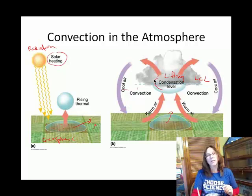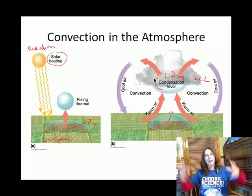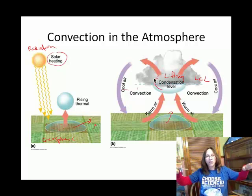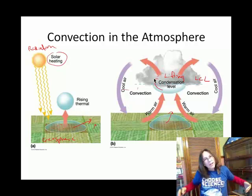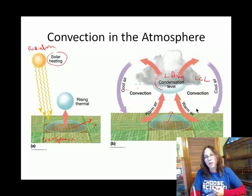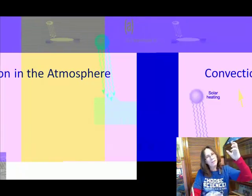Notice one other thing about the air that has risen: as it rises and cools, at some point it becomes dense again. We need to fill in where that air has left, and the relatively cool descending air fills in where the warm air took off. These are called convection cells, where air rises and cools, and then once it's cooled down, it descends.